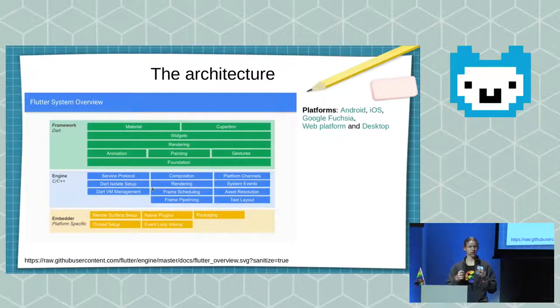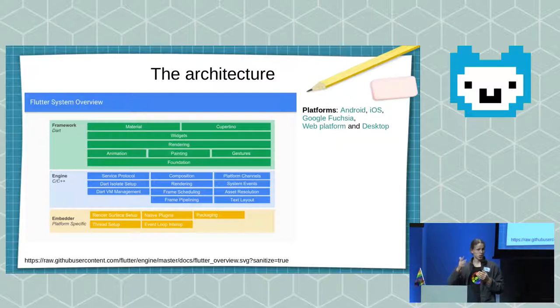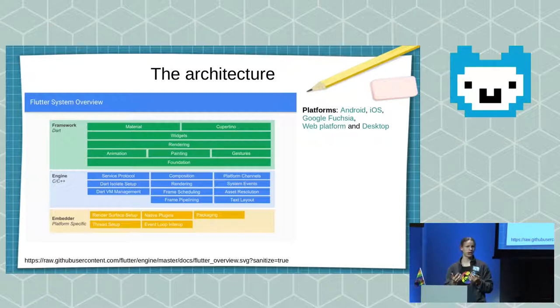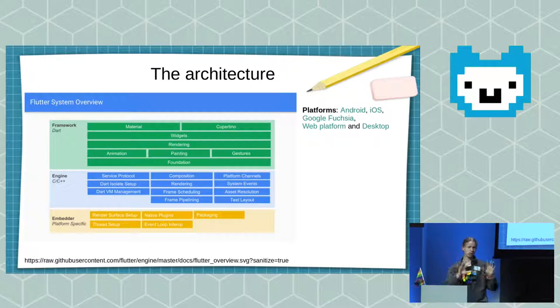Below the framework there is the engine, which is written in C and C++. The engine is the part of the software development kit that translates all the Dart code into the native language. For example, if I want to run the application as a web application, the engine will translate the Dart code and the Flutter layout stuff into HTML, JavaScript, and CSS.